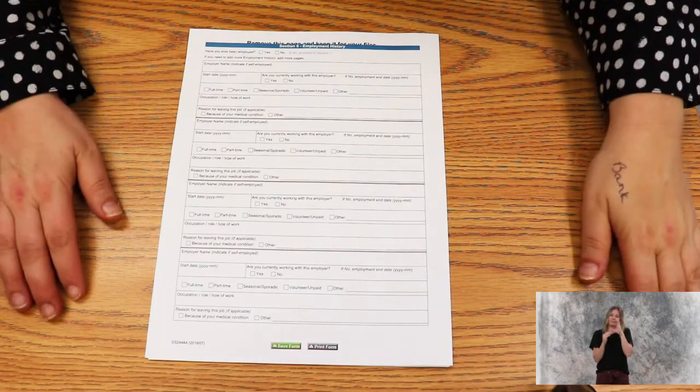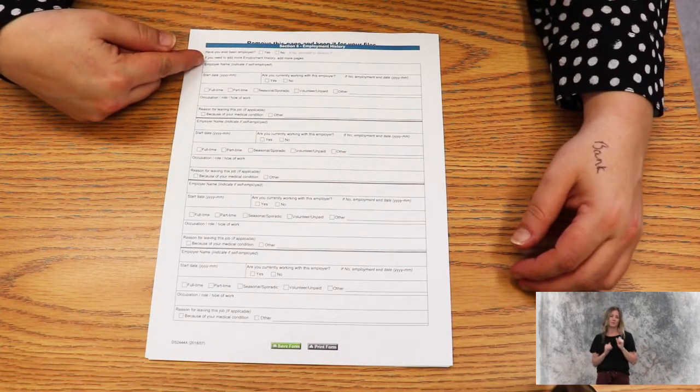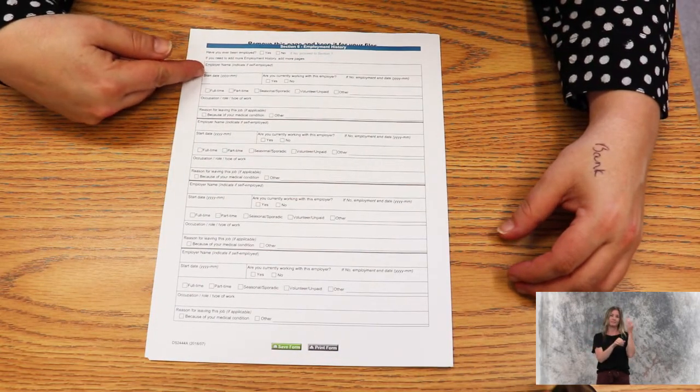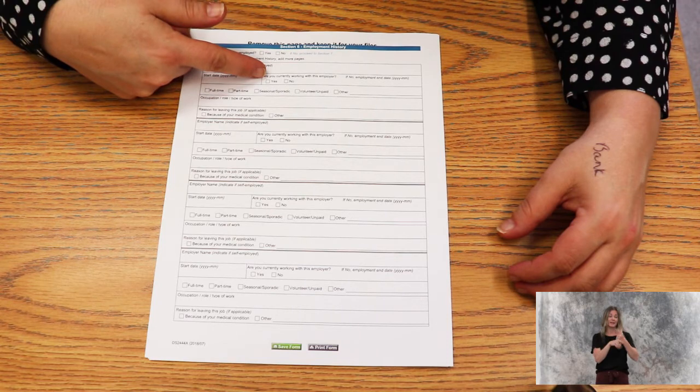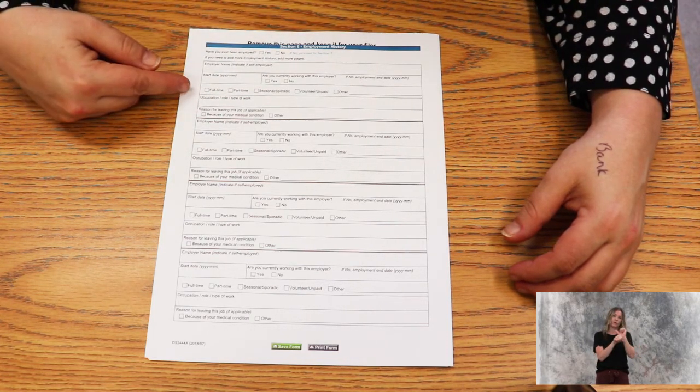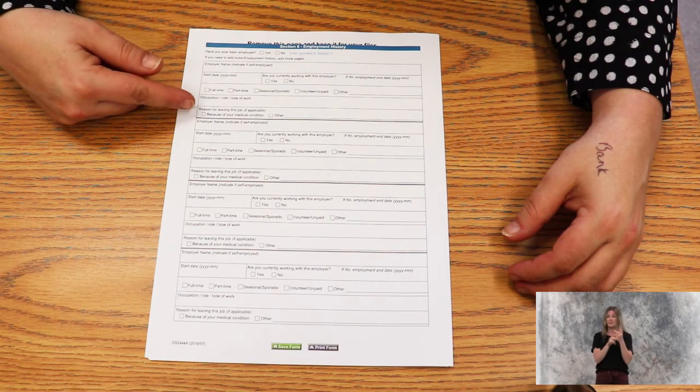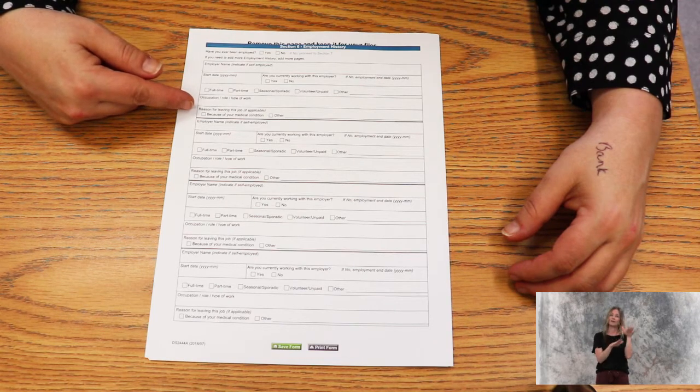Section six is about employment history. You need to provide the employer's name, the start date, whether you're currently working for this employer and the end date if you're not, whether the employment was full-time, part-time, seasonal, volunteer, or unpaid, what the type of work was, and the reason for leaving, whether it was medical or other.